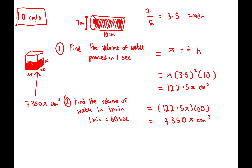Now find the height of the water in the container. The volume of the container equals 7,350π. Substituting: length × breadth × height = 7,350π, so 55 × 20 × h = 7,350π, which gives 1,100 × h = 7,350π.